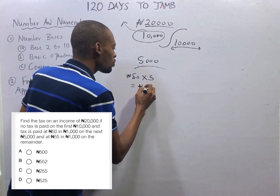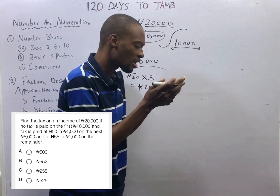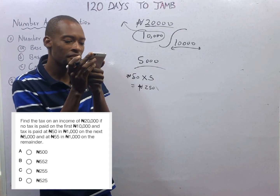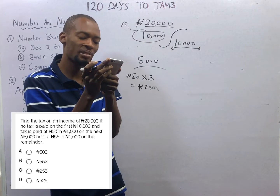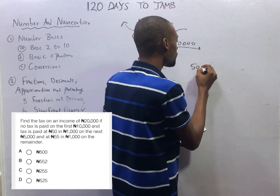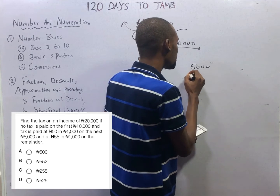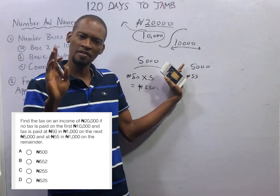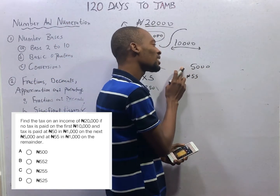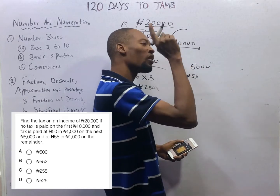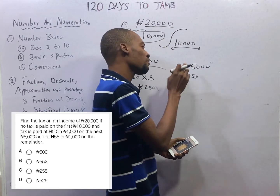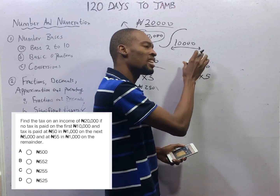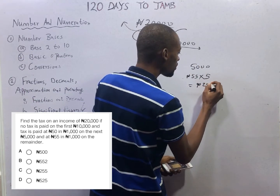The total tax on the first 5,000 Naira will be 50 Naira times 5, which is 250 Naira. And on the next 5,000 Naira, tax is paid at 55 Naira per 1,000 Naira. So the remaining 5,000 Naira, the tax is 55 Naira on every 1,000 Naira. How many 1,000 Naira do we have in 5,000 Naira? 5. Since we have 5 lots of 1,000 Naira in 5,000 Naira and each pays 55 Naira, we have 5 times 55 Naira, which is 275 Naira.